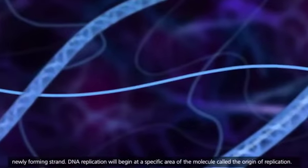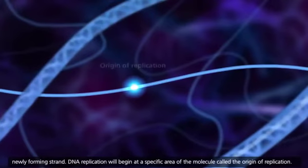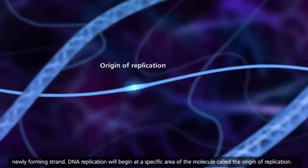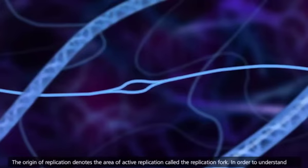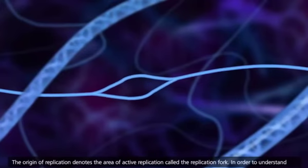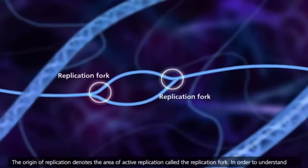DNA replication will begin at a specific area of the molecule called the origin of replication. The origin of replication denotes the area of active replication called the replication fork.